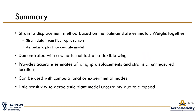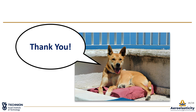To conclude, the study shows a strain-to-displacement method based on the Kalman state estimator that weights together strain data from fiber optic sensors and an aeroelastic plant state space model. The method, demonstrated on a wind tunnel model, provides accurate estimations of wing displacement and strains at unmeasured locations. A set of strain modes from different sources can be used, such as finite element model and ground vibration testing, and the method has little sensitivity to aeroelastic plant model uncertainties due to airspeed. Please see the full paper for more details. Thank you for listening.